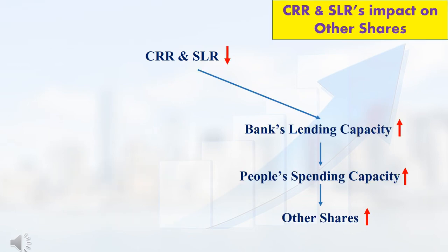If RBI reduces the CRR and SLR, what will be the impact on other shares: whenever RBI reduces CRR and SLR, the bank will have more liquidity, so the bank will issue more loans. People will also easily get loans. Because of that, people can buy many luxury items. So whenever CRR and SLR are reduced, there is a good chance the share market will have a good impact. Especially, cyclical industries will have nice growth.